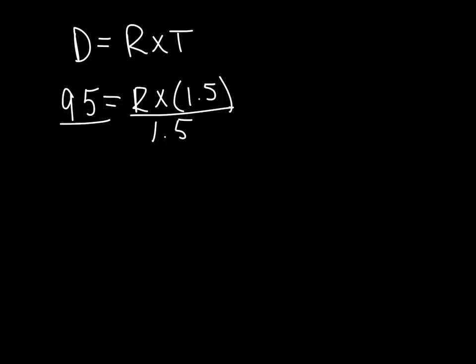So all we do to solve for R is bring the 1.5 over by dividing both sides by 1.5. What you get is a rate. It is a decimal here, so 95 divided by 1.5.